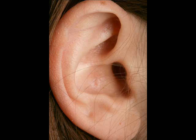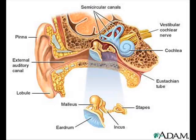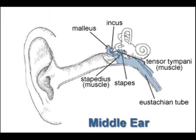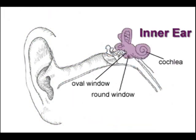The ear is the most important sensory organ for communication. A human ear looks like this and it consists of three parts: outer ear, middle ear, and the inner ear.